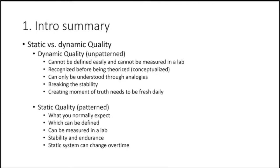Static and dynamic quality: dynamic quality is unpatterned — not really measurable, breaking stability. It's something you can't assess with SOPs. It's variable — a smile in the right place, or an employee helping at an unexpected moment, a moment of truth. Static quality is patterned, the baseline that has to be correct — stability and endurance. Even static quality can change over time, though it is comparatively measurable and stable.